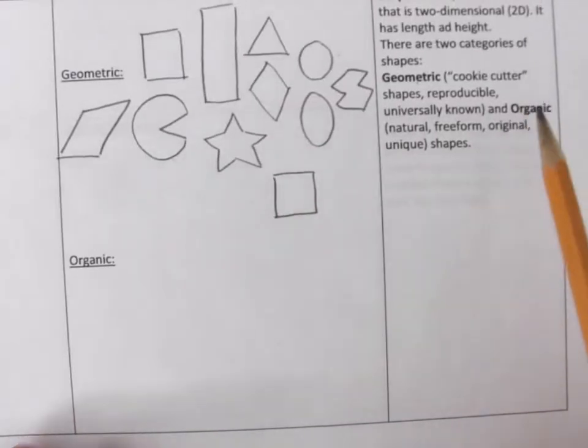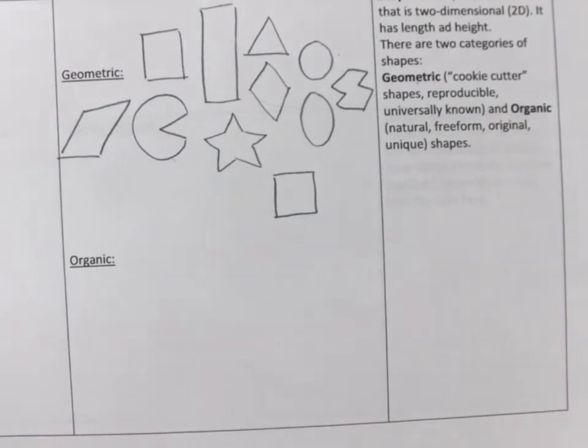And then on the other hand, we have organic shapes. So organic shapes can be unique, sometimes never reproduced or very difficult to reproduce because they're just found in nature.